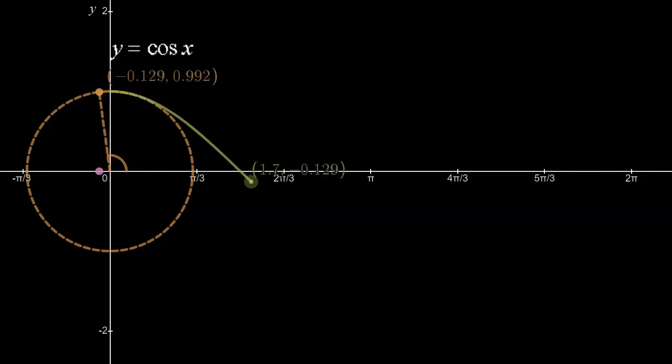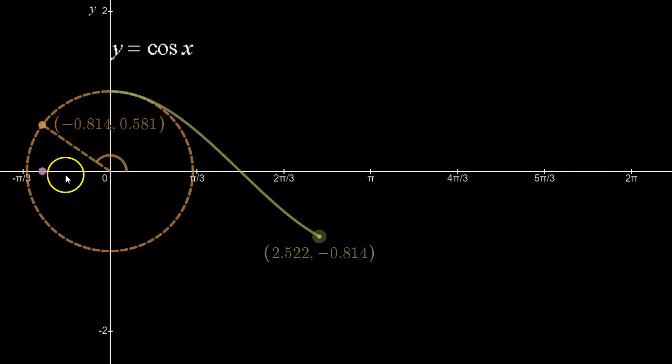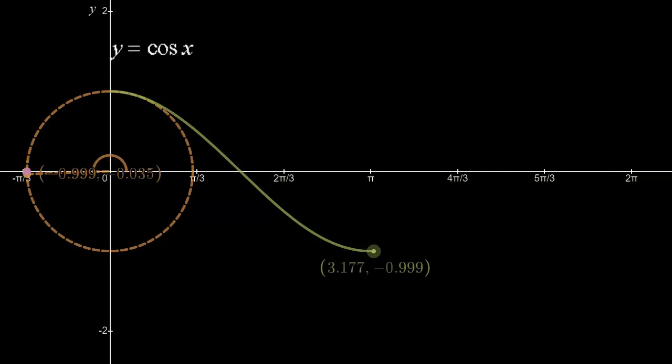Then, as we continue into the second quadrant, you can see that that pink dot continues to move over. The pink dot really refers to what's happening to cosine. You can look at the pink dot, or you can look at what's happening to the x-coordinate of the orange point. It gets more and more negative, and it looks like it's going to get even more negative before we're done with this, as we move towards pi.